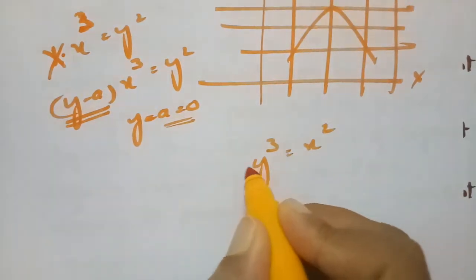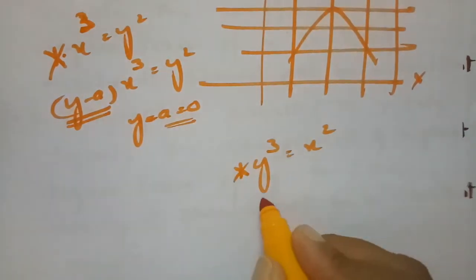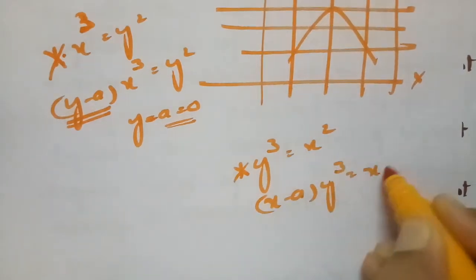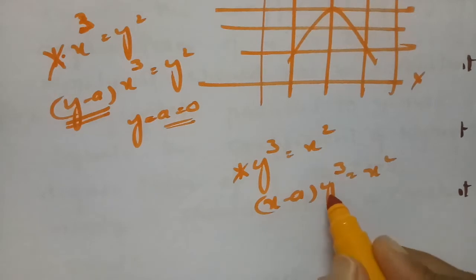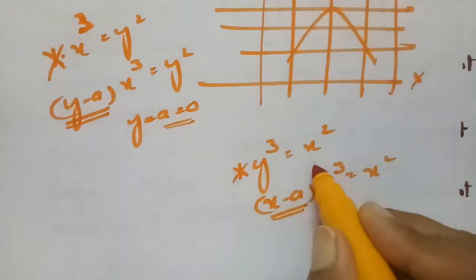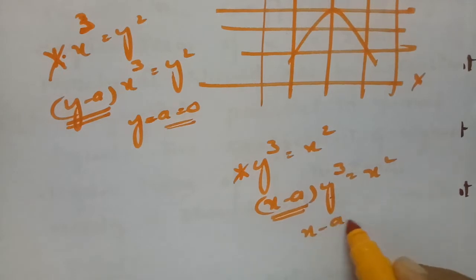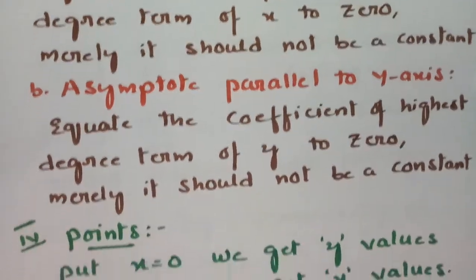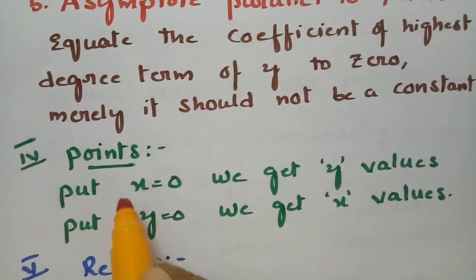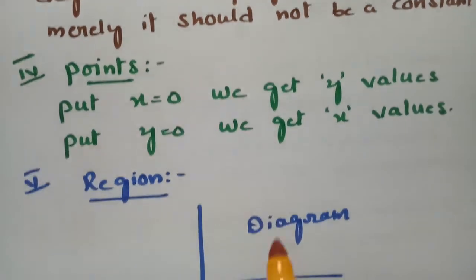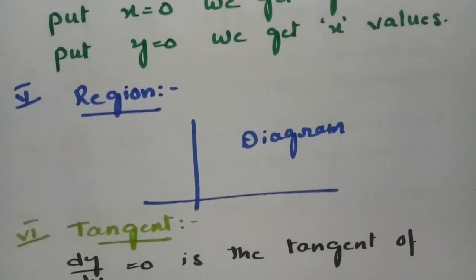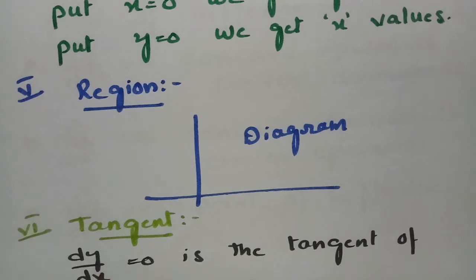The next step is finding points. If we put x = 0 we get y values, and if we put y = 0 we get x values. After getting all the values we frame a figure. The next step is the tangent — if dy/dx = 0, the first derivative gives the tangent of the curve.